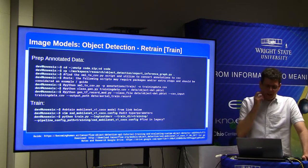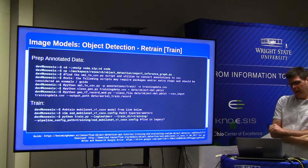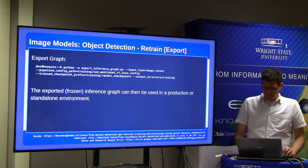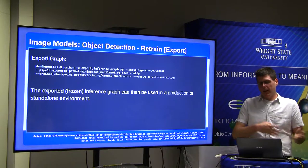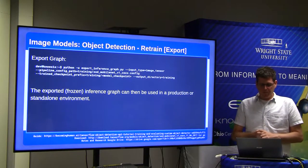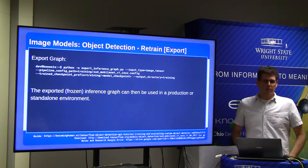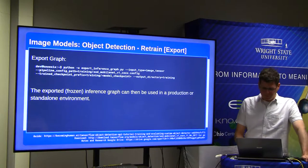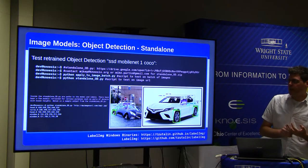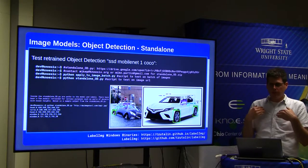Once a good model is working, export it into a frozen inference graph, which is ready for production standalone scripts. You feed images in and get inferences out without needing a GPU. A standalone object detection script on the Google Drive loads the model, takes an image URL, and produces an inference. The output visually shows bounding boxes, and numerically outputs the class and position within the image.